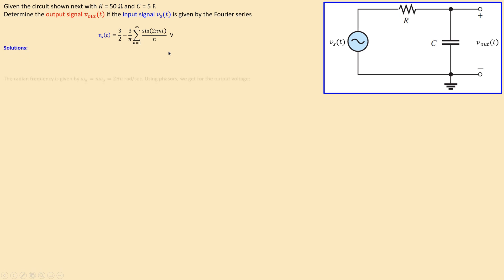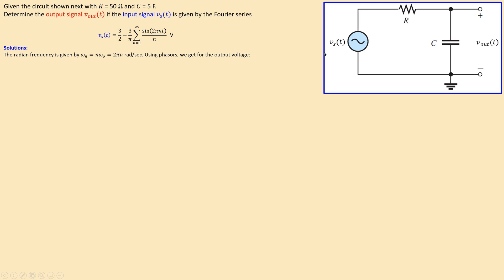First, let's determine the radian frequency. Omega_n is given by n times the fundamental frequency omega_0. From the AC terms in the expression, we can see the fundamental frequency is 2π, so omega_n = 2πn. We will use this later in our analysis. To determine V_out, we use the voltage divider rule in this circuit.